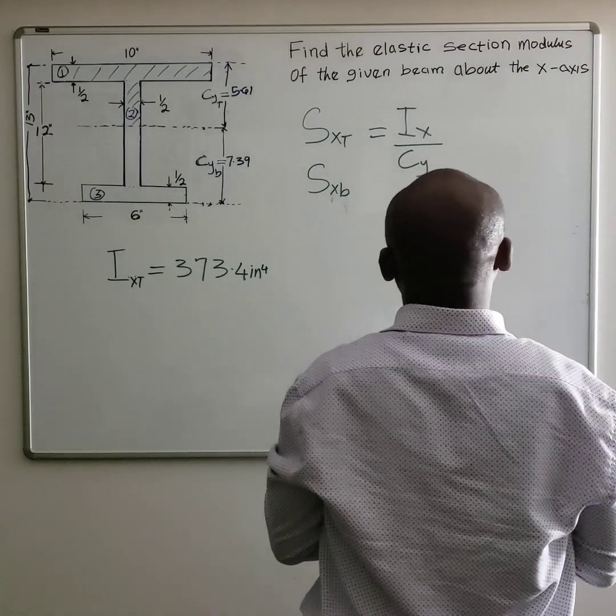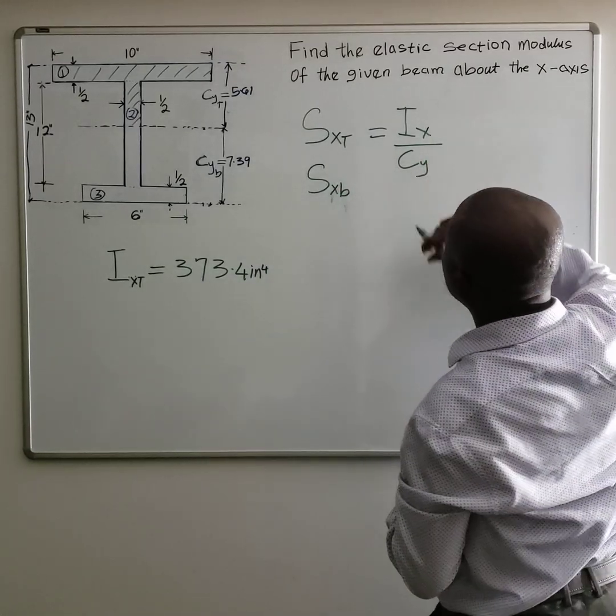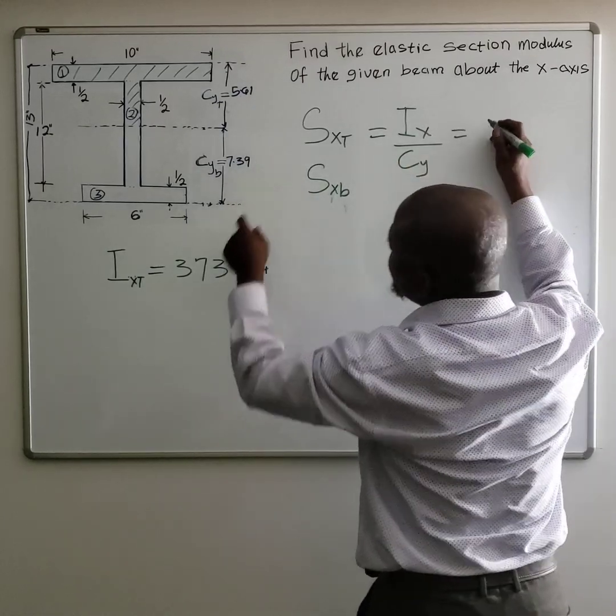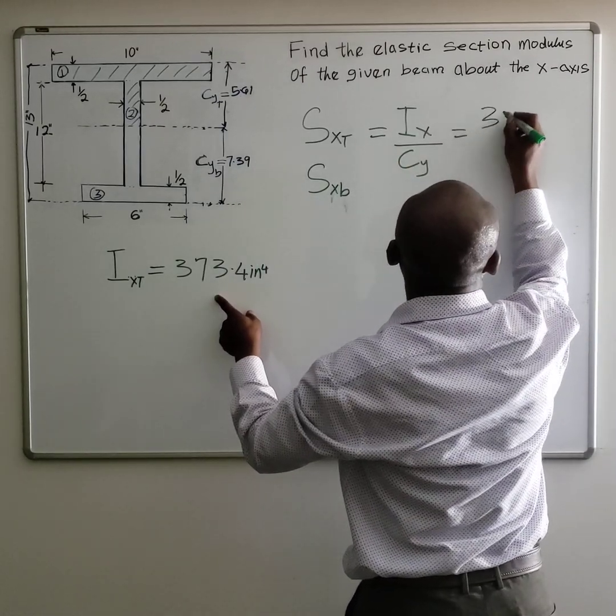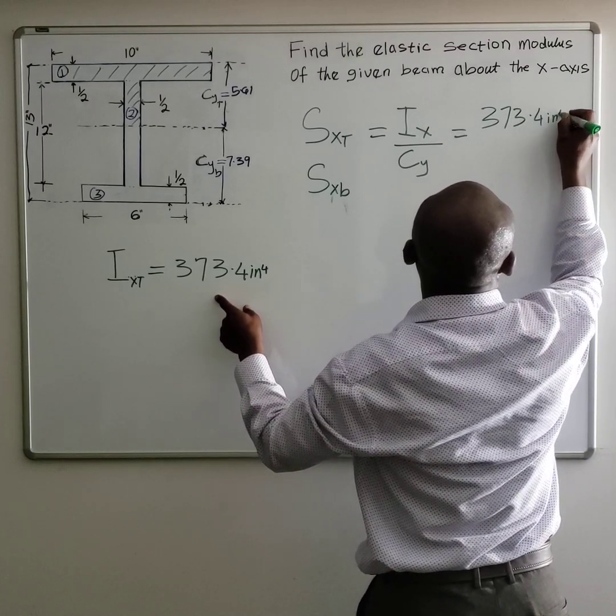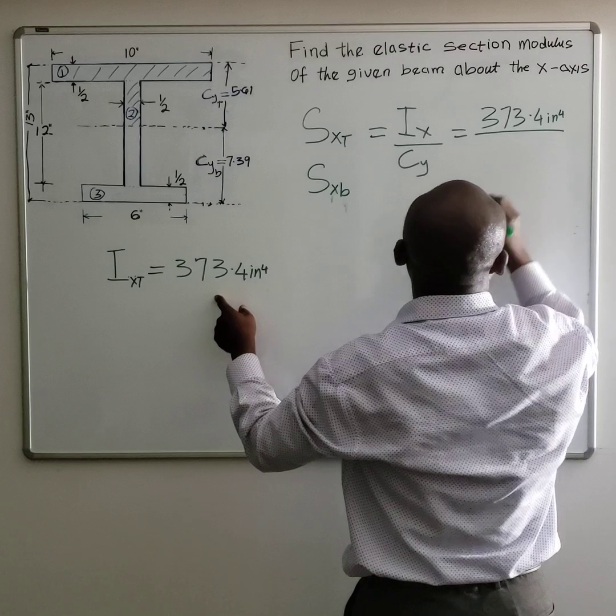So the formula is S equals I over C. And depending on whether you are looking for the top or for the bottom, in this case let's start from the top. Moment of inertia stays the same.